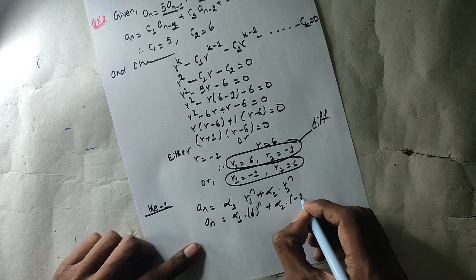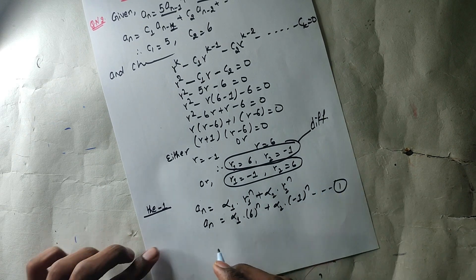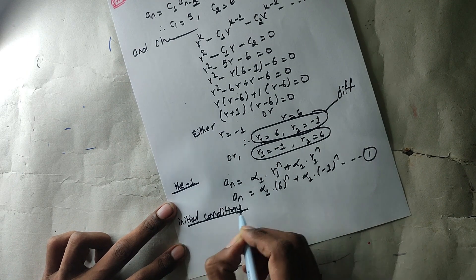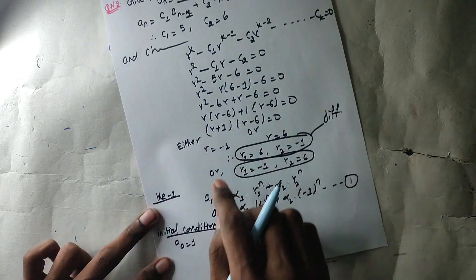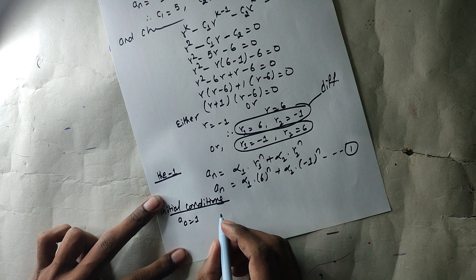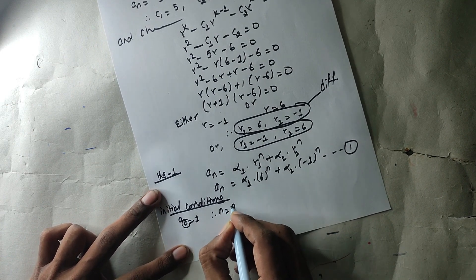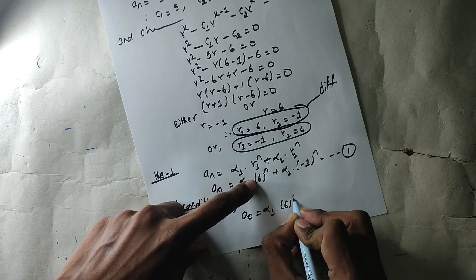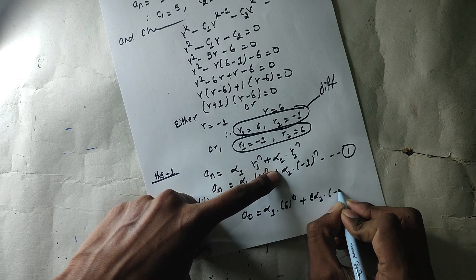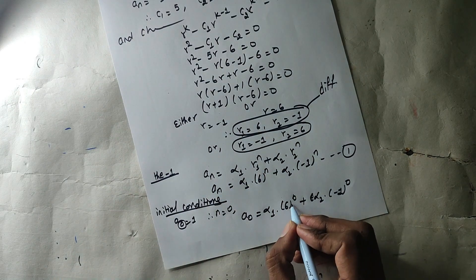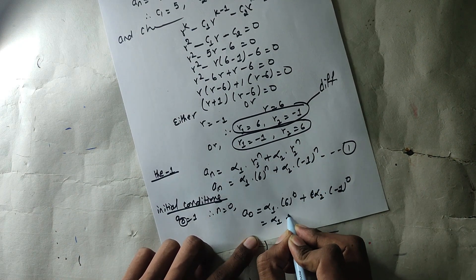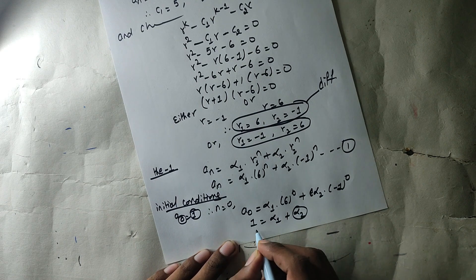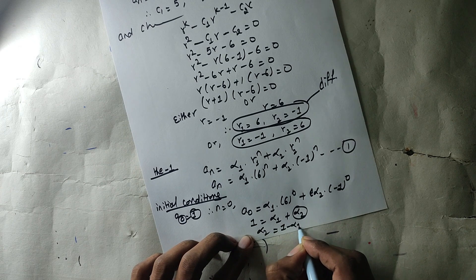Now using the initial condition: a(0) = 1. Substituting n=0 into the general formula: 1 = α1·(6)^0 + α2·(−1)^0, which means 1 = α1 + α2. So α2 = 1 − α1. This is equation one.